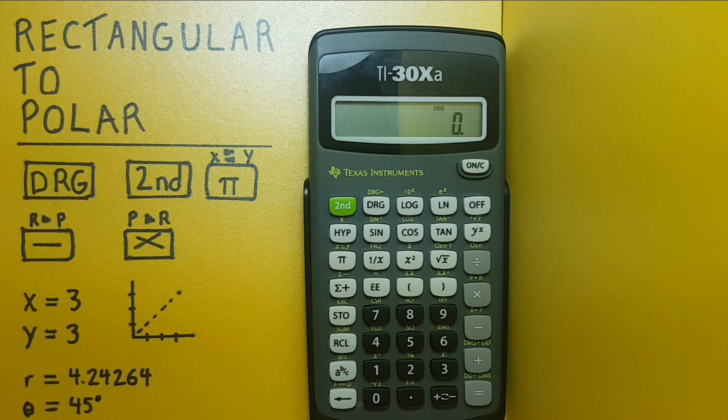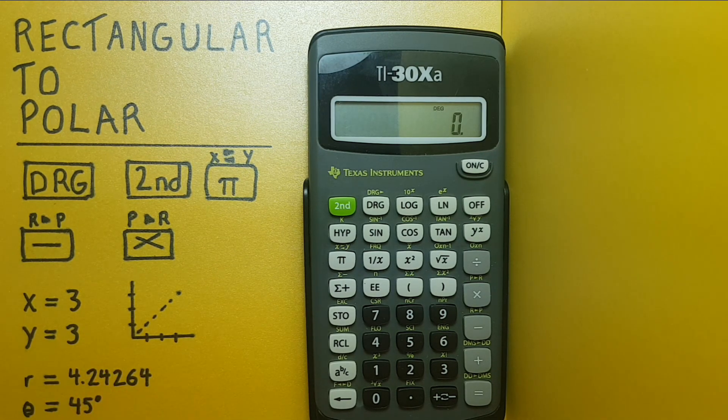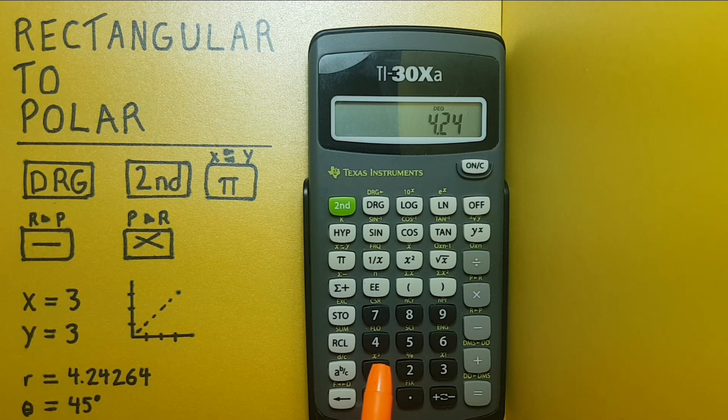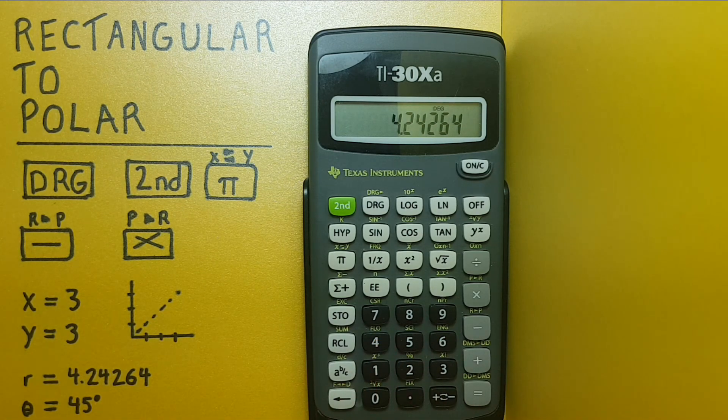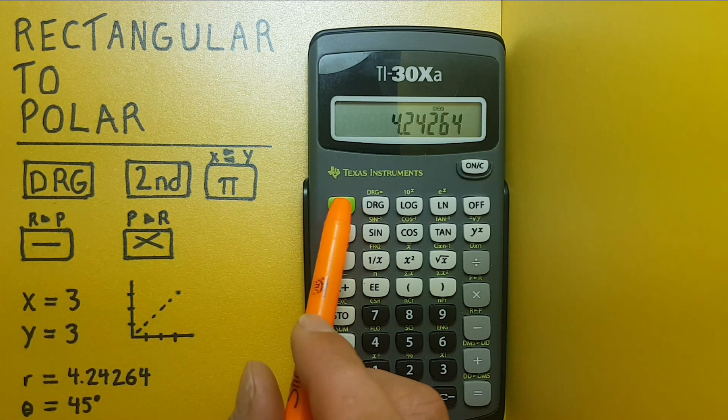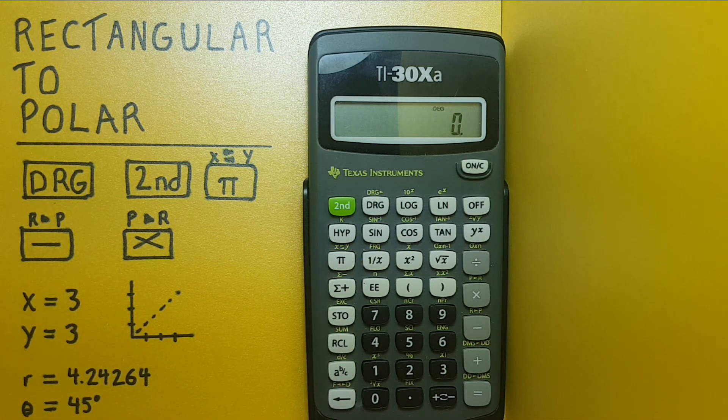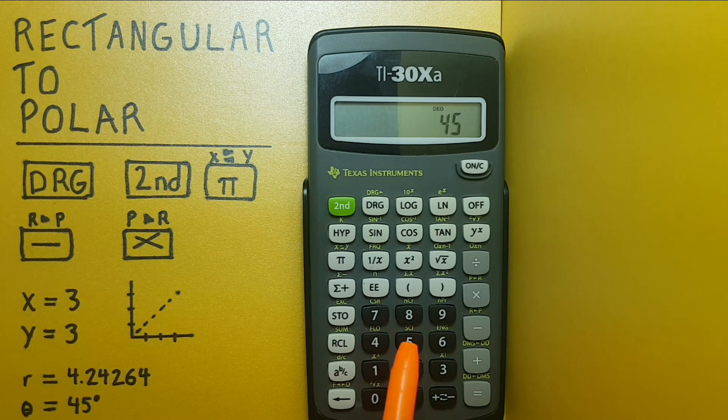And then we would start by entering our r, or our distance, which in this case is 4.24264, we'll round it. Second function, pi, to tell it it's our second part of our coordinates, and we'll do 45 degrees, enter that.